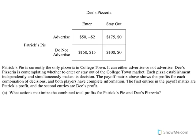So I'm going to go ahead and read the stem here quickly. Patrick's Pie is currently the only pizzeria in Collegetown. Dee's is contemplating whether to enter or stay out, while Patrick's trying to figure out if he wants to advertise or not. For part A, we have to figure out what actions maximize the combined total profits for Patrick's Pie and Dee's pizzeria. All we have to do is pick which box has the greatest sum — it's going to be the upper right box of $175 and $0. You can't just put the dollar amounts, because the question asks what actions. So the answer is: Patrick advertises, and Dee stays out.